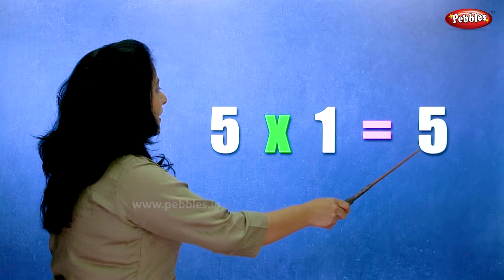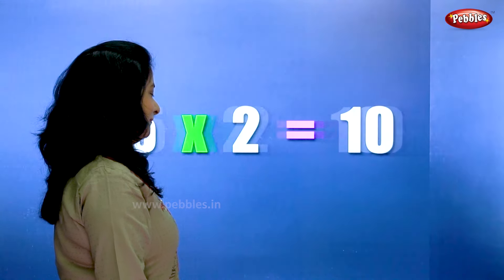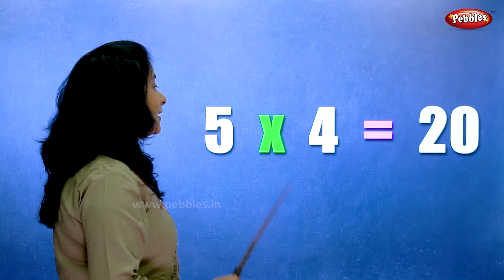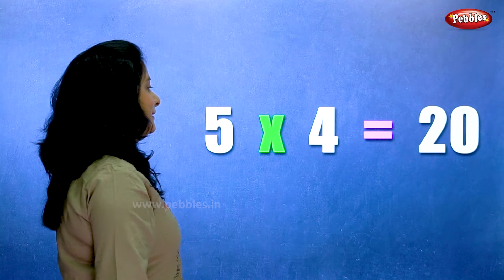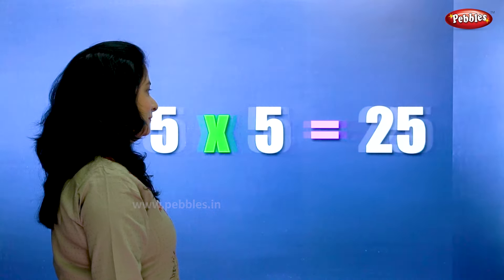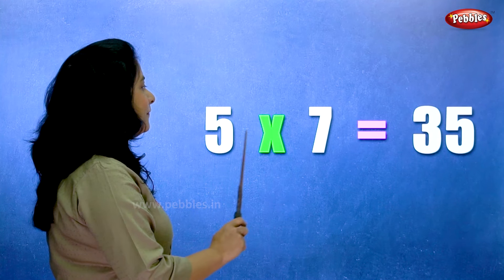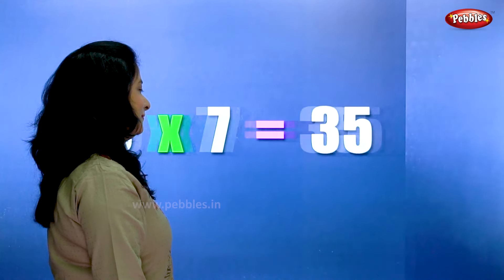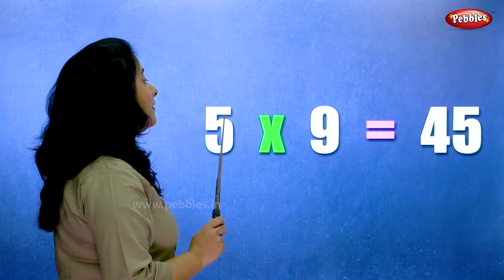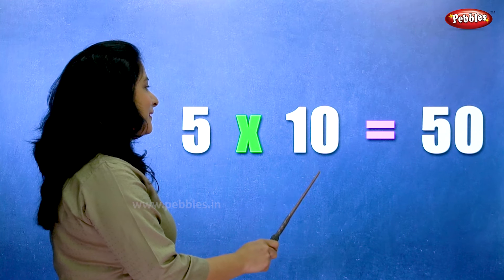Five ones are five. Five twos are ten. Five threes are fifteen. Five fours are twenty. Five fives are twenty-five. Five sixes are thirty. Five sevens are thirty-five. Five eights are forty. Five nines are forty-five. Five tens are fifty.